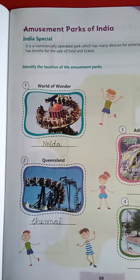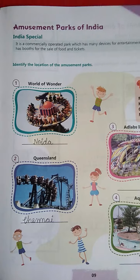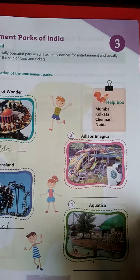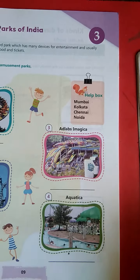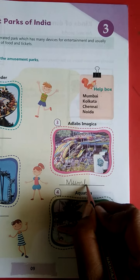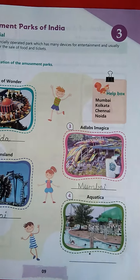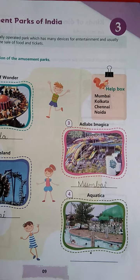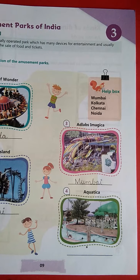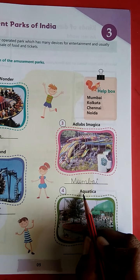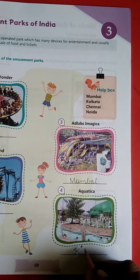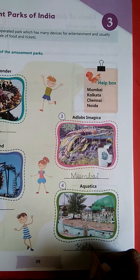Kabhi mauka mile to dekh kar aana — bahut acchi acchi jagah hain ye, bahut entertainment milta hai, bahut manoranjan hai, bahut khushi hogi aapko. Now the third one is Adlabs Imagica — Adlabs Imagica kahan hai beta? It is situated in Mumbai. Chote chote jhulay hote hain lekin yahan par bahut bade bade aur electrical jhulay hain. Now the fourth one is Aquatica — where is it situated? It is situated in Kolkata.